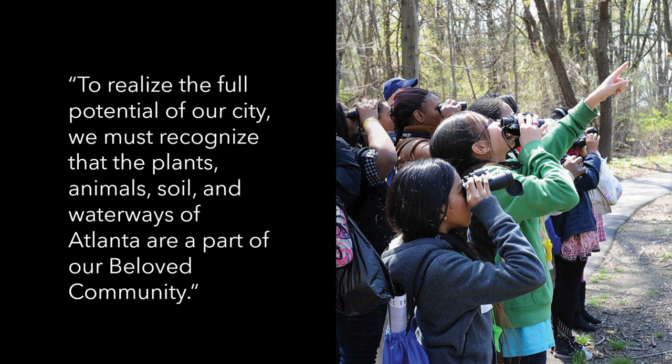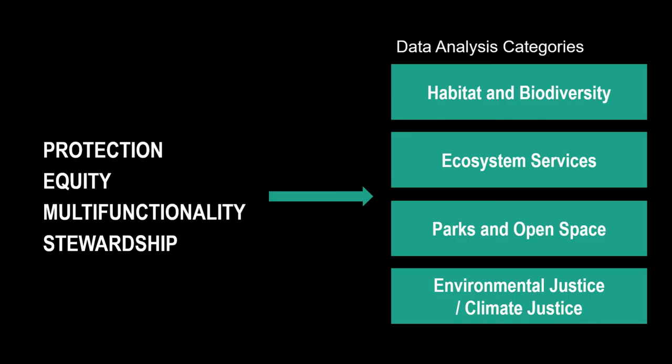We espouse the idea that to realize the full potential of our city, we must recognize that the plants, animals, soil, and waterways of Atlanta are a part of our beloved community. With this common understanding of the story of place, we moved to a needs assessment organized around four goals: protection, equity, multifunctionality, and stewardship — with analysis in four categories: habitat and biodiversity, ecosystem services, parks and open space, and environmental and climate justice. We specifically pulled out habitat and biodiversity, acknowledging its agency and importance separate from the services it provides.